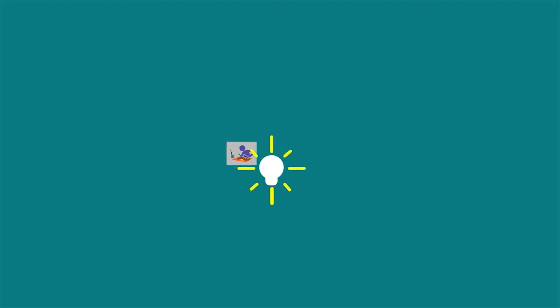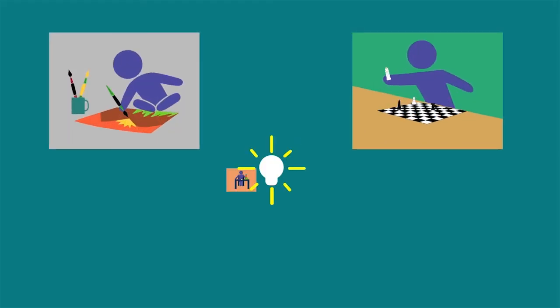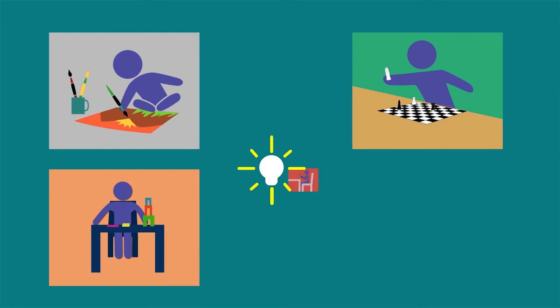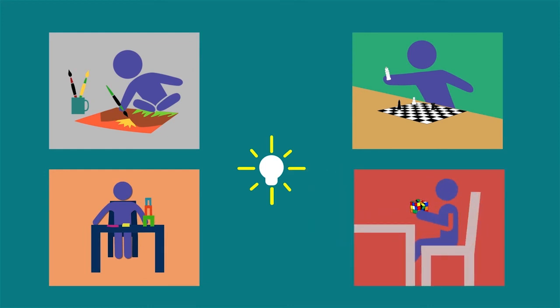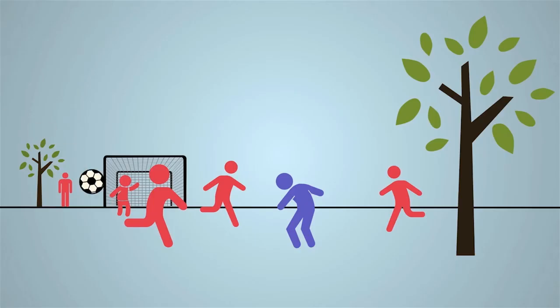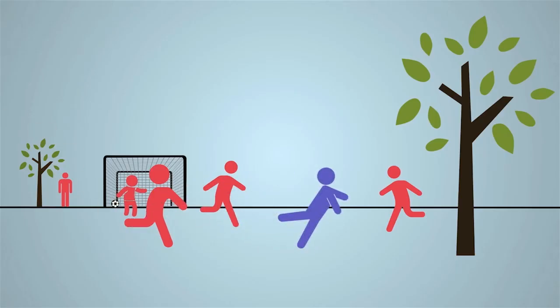Keep the mind active: encourage the child to use free time to read, sing, draw, play games, and solve puzzles — all this will keep the child's brain stimulated and active. Keep the body active: if the child is feeling well, let the child play outdoors in a clean, crowd- and dust-free environment and get some fresh air.